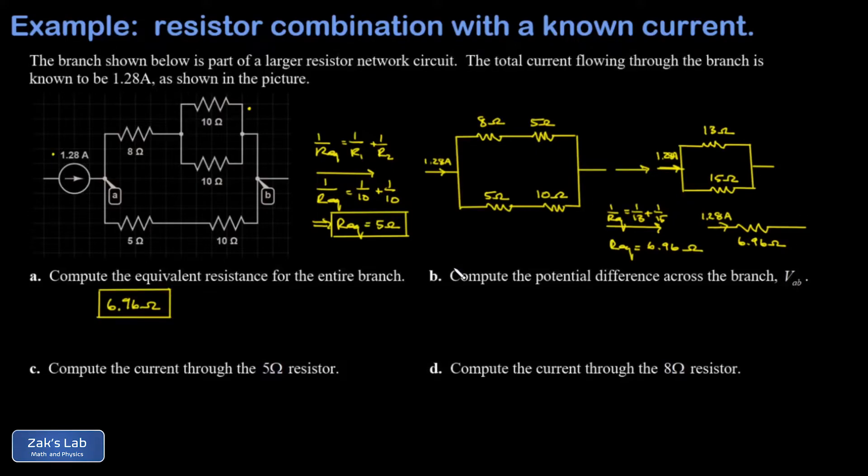In part B we want to get the potential difference from node A to node B. That's the potential difference across this entire resistor network that we simplified down to the single 6.96 ohm resistor. We have the current flowing through this equivalent resistance, 1.28 amps, and we have the equivalent resistance itself. If you have the current and the resistance, you can figure out the potential difference across it with Ohm's law.